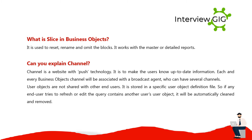What is slice in Business Objects? It is used to reset, rename, and omit the blocks. It works with master or detailed reports. Can you explain channel? A channel is a website with push technology, used to keep users up-to-date with information. Each Business Objects channel is associated with a broadcast agent who can have several channels. User objects are not shared with other end users — they are stored in a specific user object definition file. If any end user tries to refresh or edit a query containing another user's user object, it will be automatically cleaned and removed.